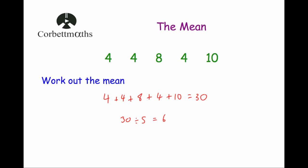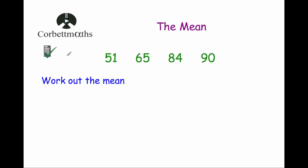Let's have a look at another question now. This next question is a calculator question. Sometimes when we're asked to work out the mean, they can be calculator questions — the numbers might be bigger, or when we divide we may get a decimal number. So we've got 1, 2, 3, 4 numbers. We're going to add up these four numbers and divide by 4. So we're going to do 51 plus 65 plus 84 plus 90.